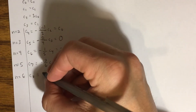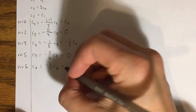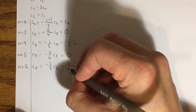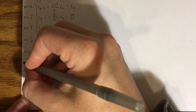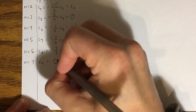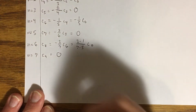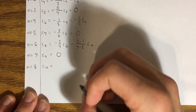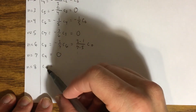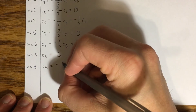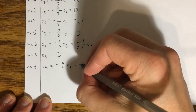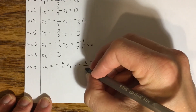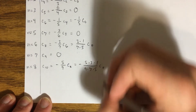For n=6: c₈ = negative (6-3)/(6+1) times c₆ = (-3/7) times (-1/5) c₀ = (3)/(7·5) c₀. For n=8: c₁₀ = negative (8-3)/(8+1) times c₈ = (-5/9) times (3/(7·5)) c₀ = negative (5·3·1)/(9·7·5) c₀. The pattern in the non-zero terms is emerging clearly.